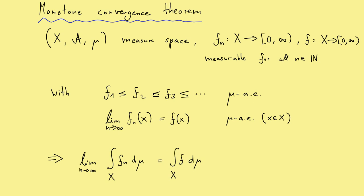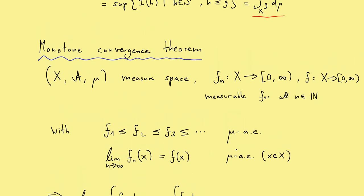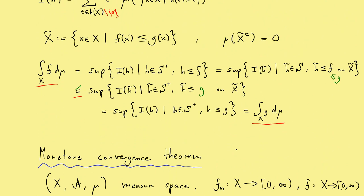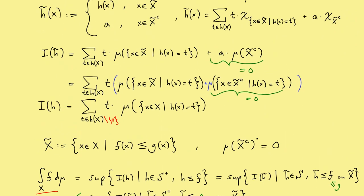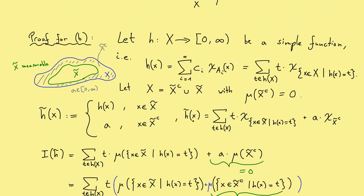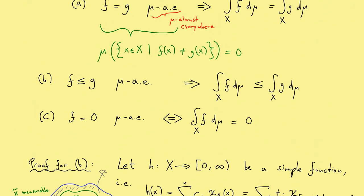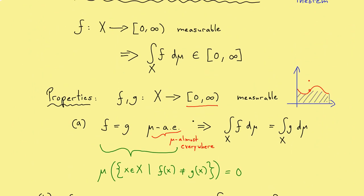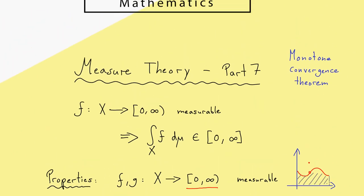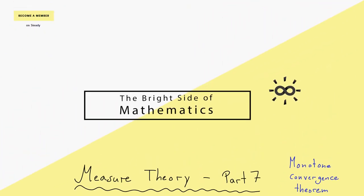Now you know when you can push the limit inside the integral: when you have a monotonic sequence of functions. Indeed, such convergence theorems are mostly the best advantages the Lebesgue integral has over the Riemann integral. Therefore, I really want to show you the proof of this monotone convergence theorem. However, this is something we will do in the next video, because this video is already very long. It is good to do a short break. Maybe now recall everything we did here in this video, and then come to the next video where we do the proof of the monotone convergence theorem. I really hope you will be there. See you next time. Bye.